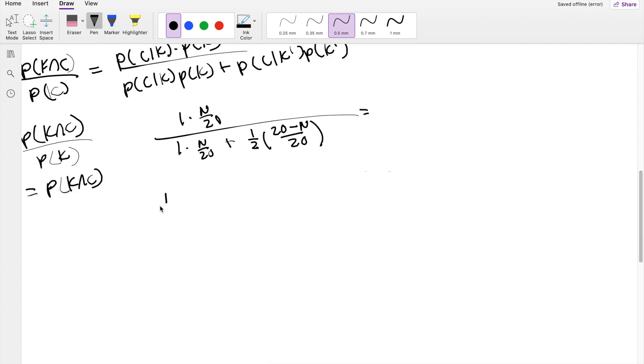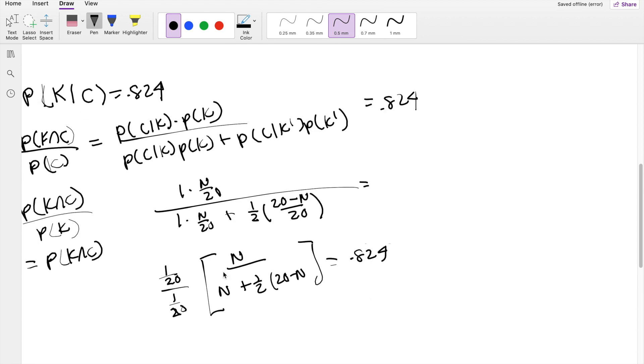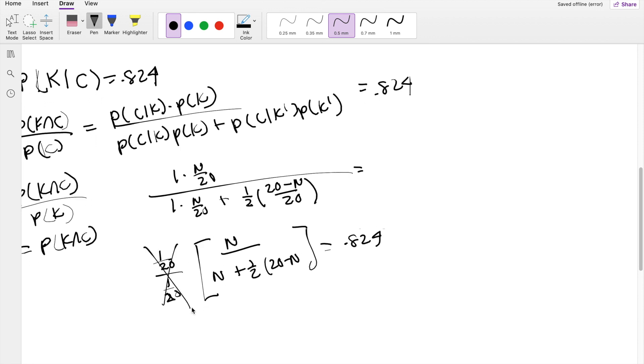Okay, so I can actually factor out 1 over 20 from the numerator and 1 over 20 from the denominator. So you get N over N plus 1 half times 20 minus N equals 0.824. And you know that 1 over 20 divided by 1 over 20 is just 1. And then bringing this to the other side, you get N equals 0.824 times N plus 0.5, because half is just 0.5, times 20 minus N.